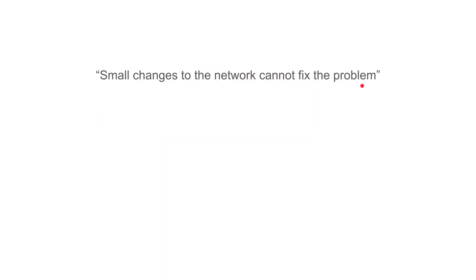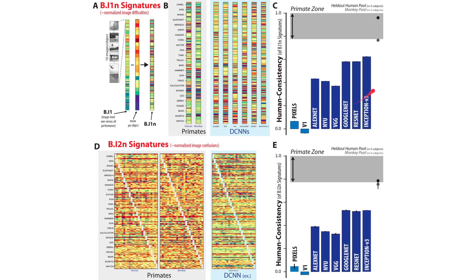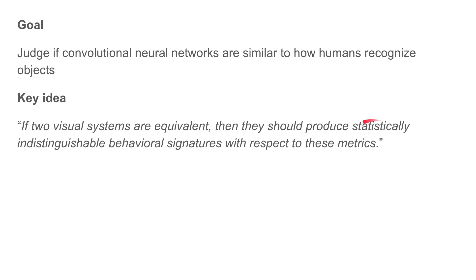They make small changes to the network and see that this problem is not fixed. So they conclude that some kind of change needs to be done if we want the accuracy of CNNs to be more human-like. That's all — I just found this idea quite interesting and wanted to share it. This key idea was quite interesting. Have a nice day.